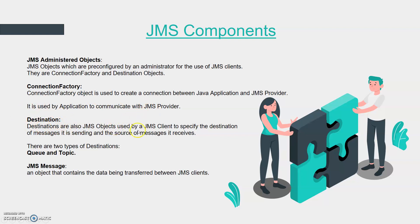Destinations are also JMS objects used by a client to specify where to deliver a message and where to receive messages from. So connection factory creates the connection with the provider, while destination decides where to put the message. There are two types of destinations: queue and topic. We'll learn what queue and topic are in the coming videos.